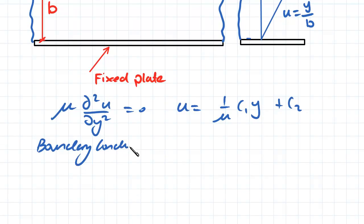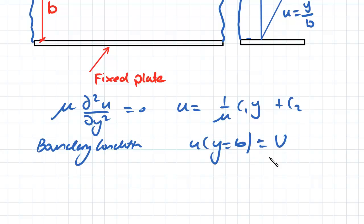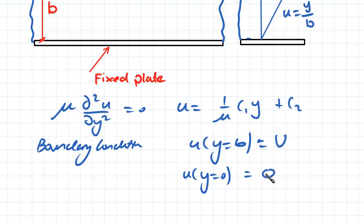Our boundary conditions in this case are that the velocity when y is equal to b is going to be equal to the velocity of our plate. And the velocity for our bottom plate, which occurs when y is equal to 0, is going to be equal to 0. Substituting in those values, we can find c1 and c2.